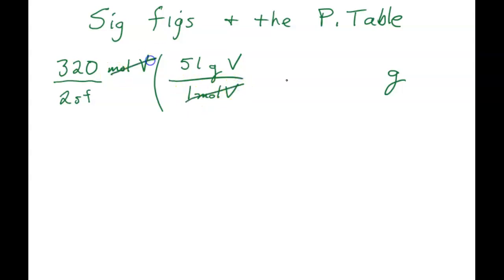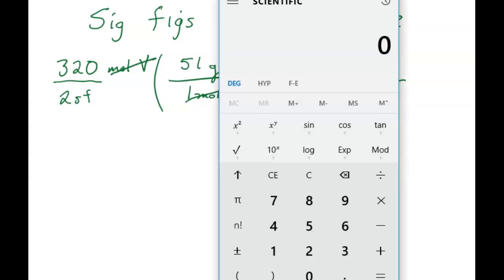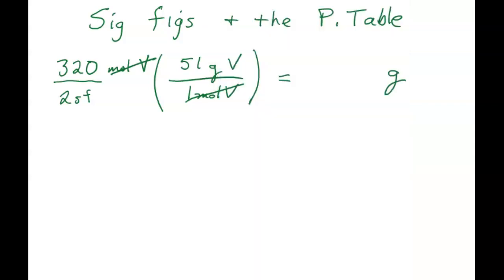These are going to cancel and I'm left with my answer. 51 times 320 equals, and I'm going to round that to two sig figs, which will be 16,000.